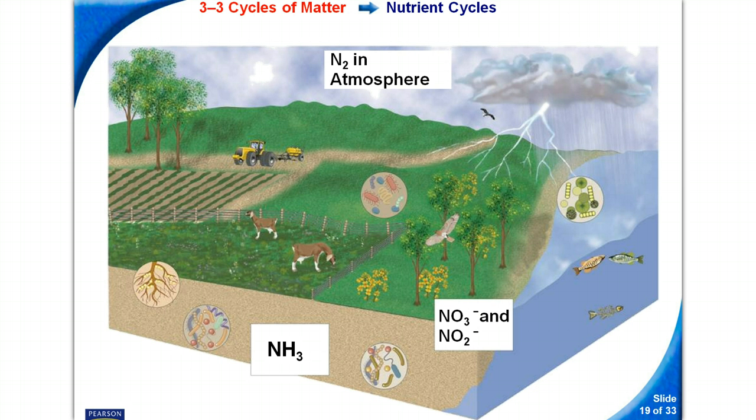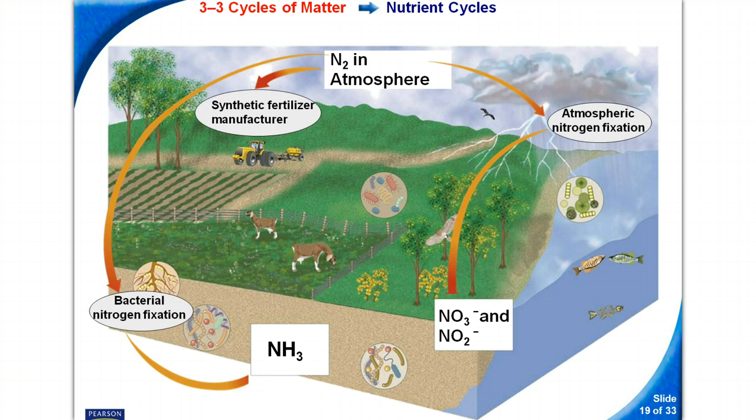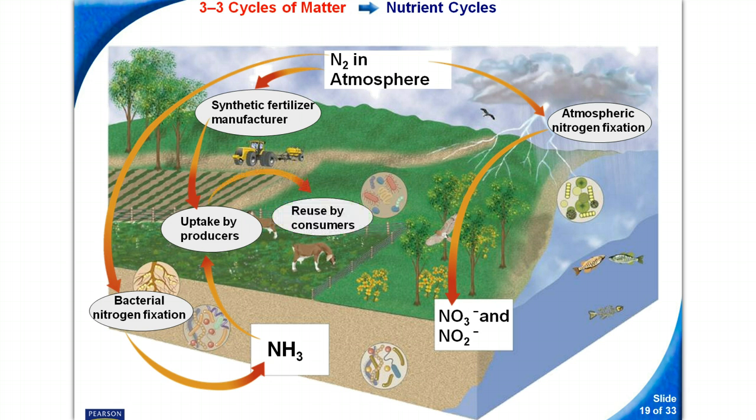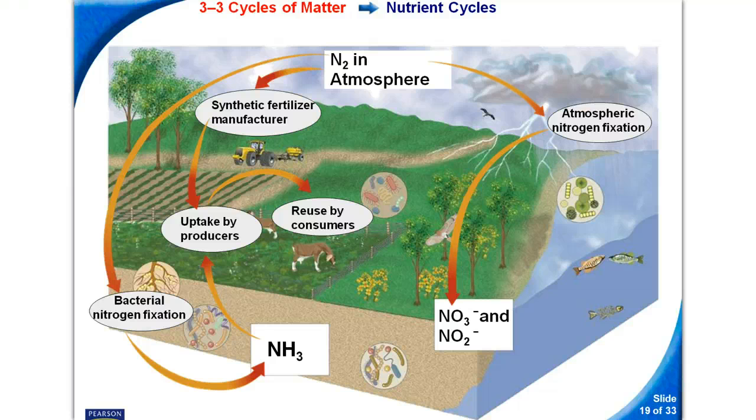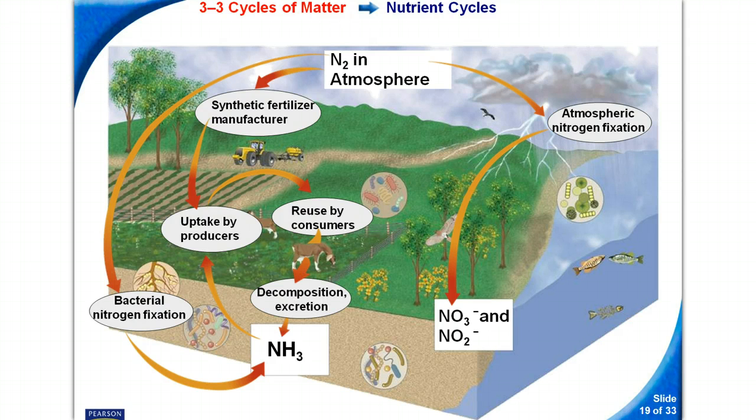Here's the nitrogen cycle. The N2 in the atmosphere is used in synthetic fertilizer, bacterial nitrogen fixation, and then you have NH3. Then it's uptake by producers, then it's reused by consumers. Then the consumers die and they decompose and they excrete NH3.